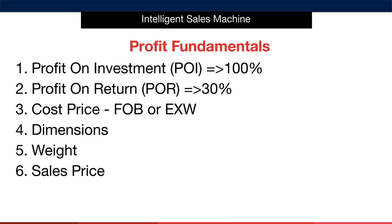Let's review the profit fundamentals. The first key indicator is a figure called POI, or profit on investment. With every product you sell, you're looking to achieve a POI of 100% or more — meaning you take your original investment and create a 100% return, effectively doubling it. So if we invest six dollars in an item, we want to be left with six dollars profit after the item is sold and all expenses are paid. It's this doubling of investment capital that allows us to grow so quickly.